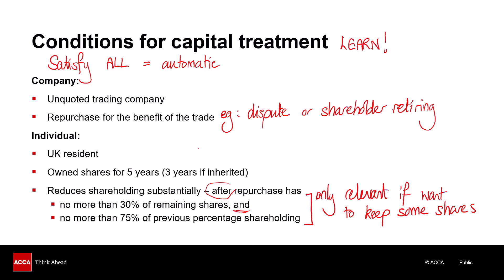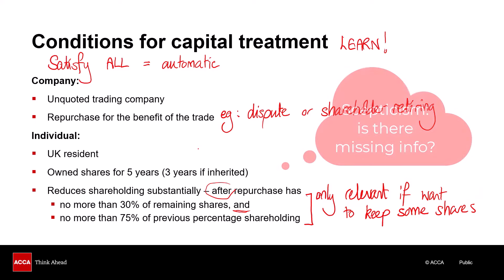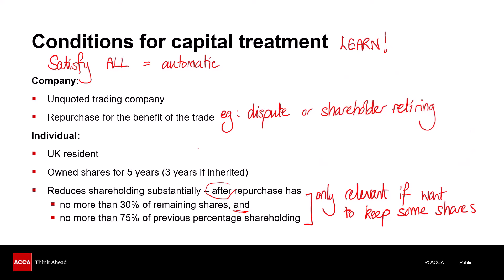It is quite easy to breach that rule if you decide that the income treatment is going to be better, but usually as we'll see when we go through an example we will find that the capital treatment results in less tax. Very often in exam questions what you might have to do is think about these conditions, or consider some of them — the question could say that some have been satisfied and ask you to consider the substantial reduction test. Sometimes there might be missing information — that's where you can apply the professional skill of scepticism by questioning whether, for example, this is a repurchase for the benefit of the trade. So let's run through a quick example now with some numbers.